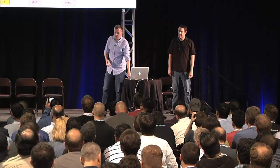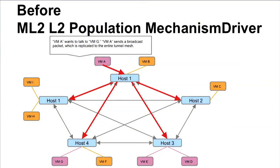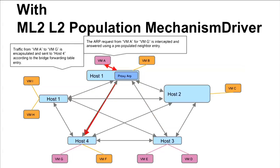Graphically: before the ML2 L2 population driver, if VM-A wanted to talk to VM-G it would have to send broadcast traffic out to all hosts. With a very active network with lots of instances trying to resolve addresses, you end up flooding all the tunnels and creating a lot of unnecessary traffic. With the ML2 population driver, we install proxy ARP on the host — so when VM-A tries to resolve VM-G's address, the proxy ARP answers and routes traffic directly to host four. Host one, two, and three no longer see that unnecessary traffic.